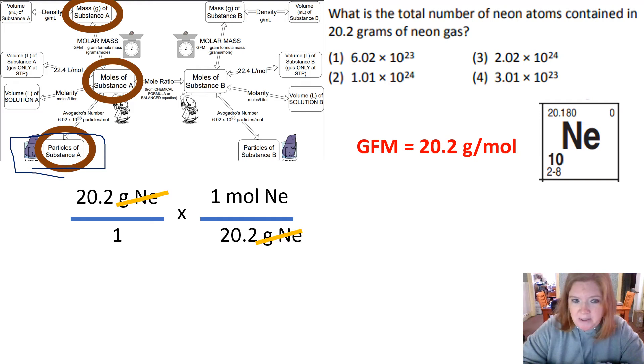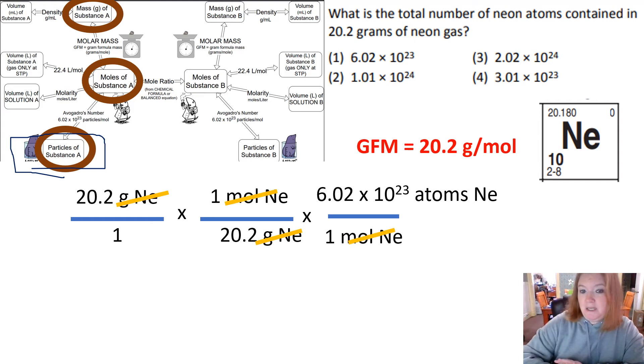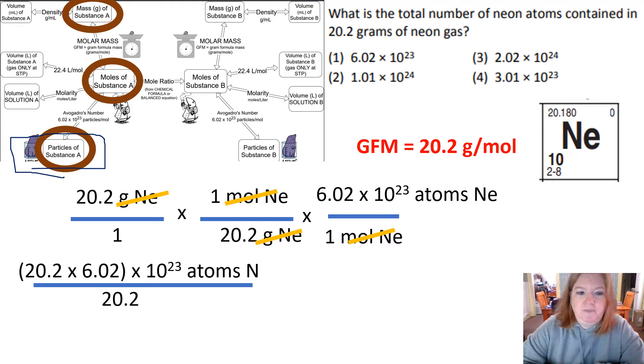But I still need to get to particles. So the conversion factor for that is 6.02 times 10 to the 23rd atoms divided by one mole. Now why do I know it was that way instead of flipped? Because I need to be able to do that, cancel out moles.